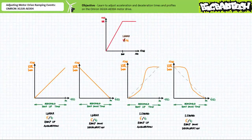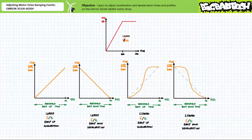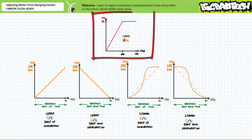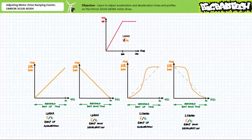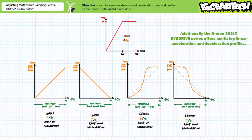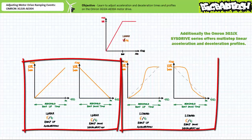In this application exercise we'll learn to adjust acceleration and deceleration times and profiles and examine their influence. To keep our comparison on a level playing field, all iterations will use a linear volts per hertz profile. Only acceleration and deceleration time and profiles will change. The Omron 3G3JX AE004 motor drive has two available acceleration and deceleration profiles: linear and S-shaped.